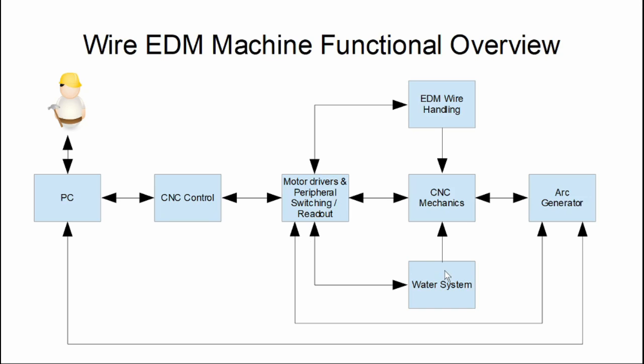So the water system contains everything that is needed to flush the workpiece and to keep the water clean and to deionize the water and also to keep the water at the right temperature. So some examples of what this system includes is the water tank, the pumps, the valves, several particle filters, a deionization filter, water level monitoring, and a water conductivity sensor. So the water system only interfaces to the CNC mechanics through two hoses, one for the upper flushing head and one for the lower. The water system also interfaces to the peripheral box such that the CNC controller can control the pumps and monitor the water levels.